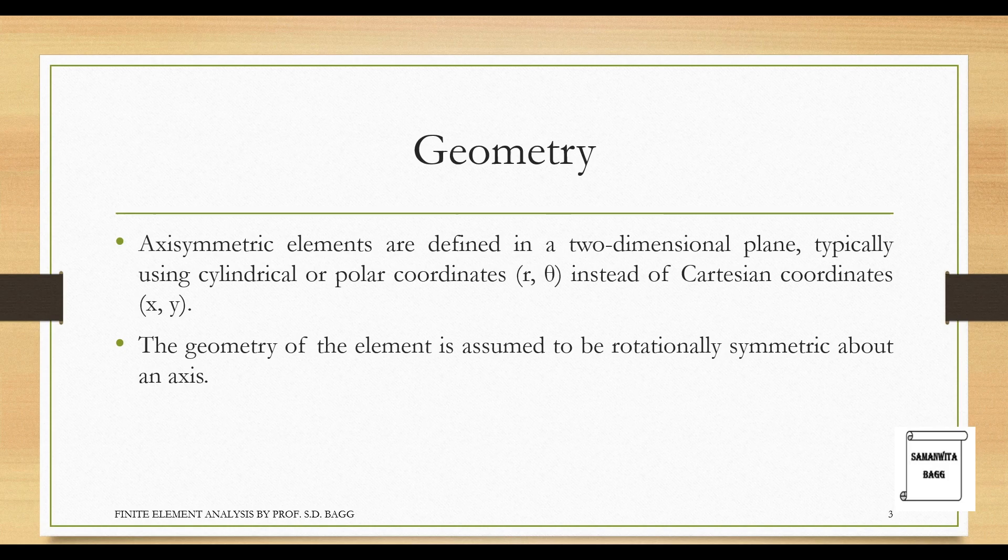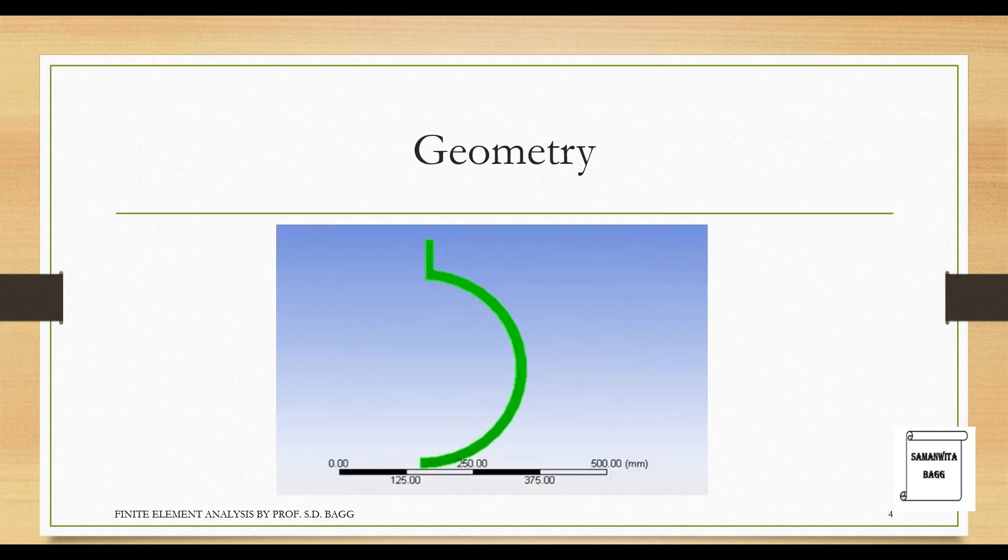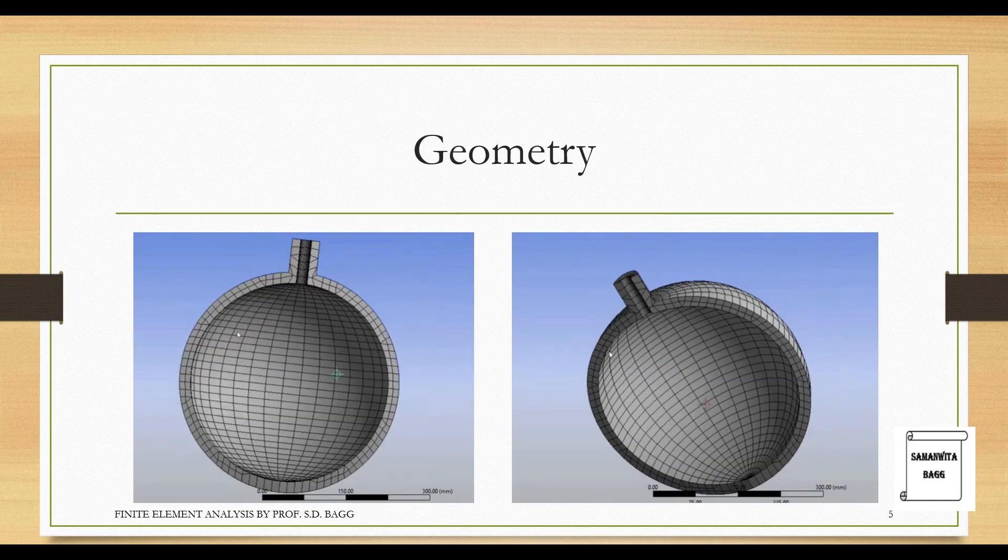The geometry of the element is assumed to be rotationally symmetric about an axis. Suppose I have created this geometry with a y-axis about which I can revolve this body to create a 3D shape. When I use the axisymmetric option and want to see half of the body, this is how it looks. Both indicate the same shape; the orientation just helps you understand that this is 3D.